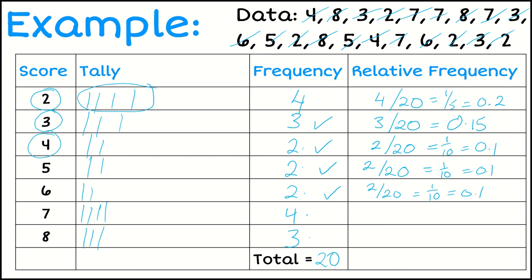Now number 7, the score of 7. That's got a frequency of 4. So its relative frequency is 4 out of 20, which simplifies to 1 out of 5 or 0.2.